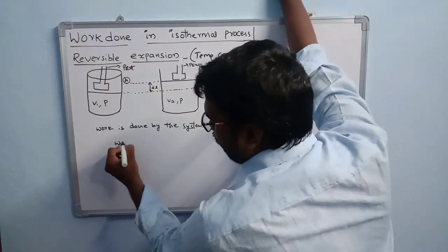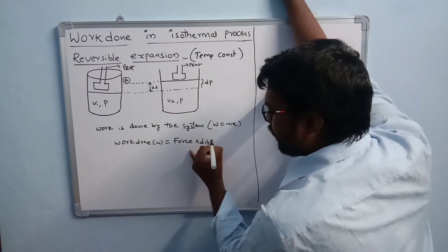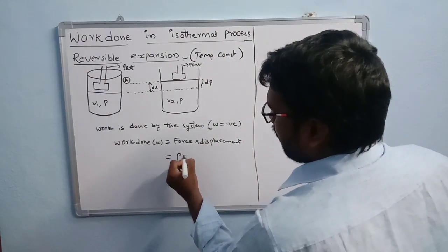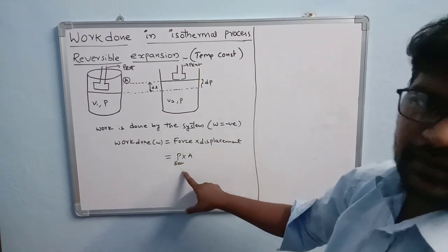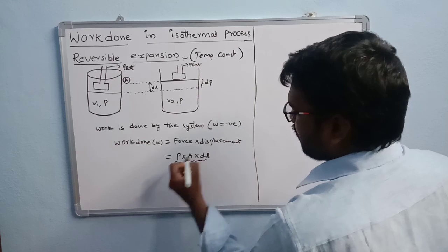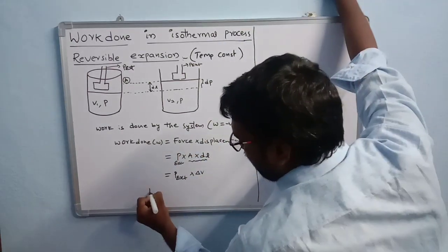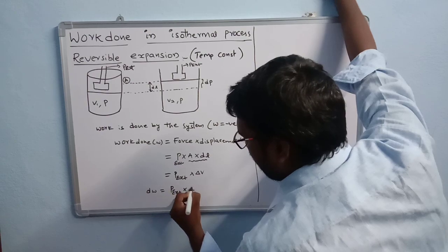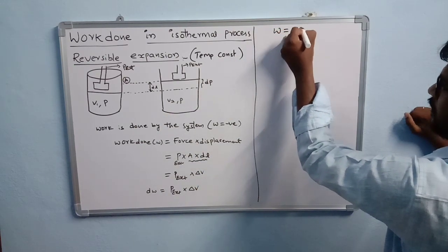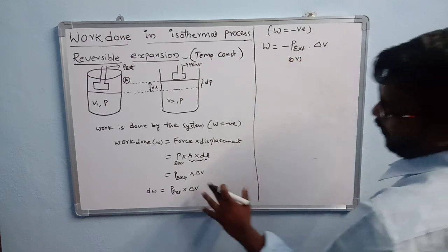For finding work done, we use: work = force × displacement. In place of force, we write pressure × area cross section, so it is P_external × A, and displacement is dl. Area cross section × displacement gives change in volume, so for small changes: dW = P_external × dV. Since work is done by the system, W = −P_external × dV.